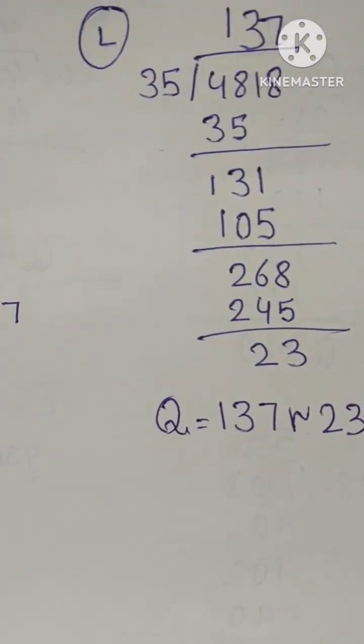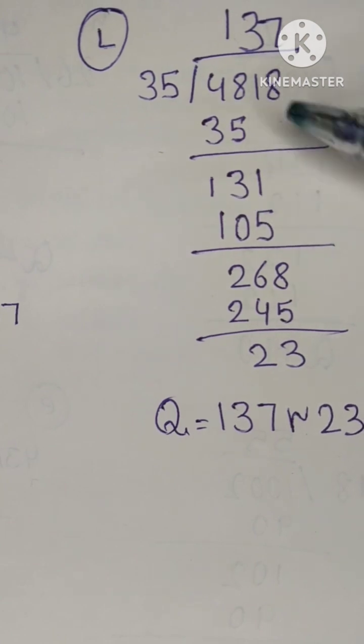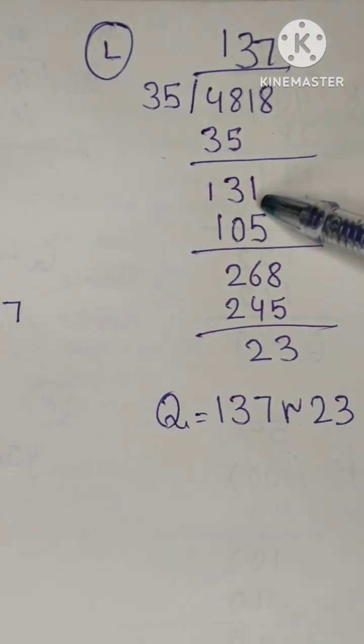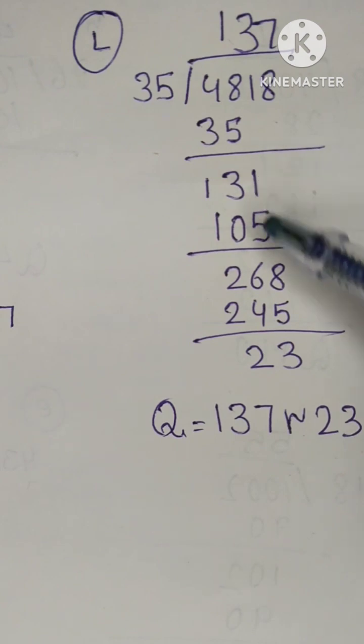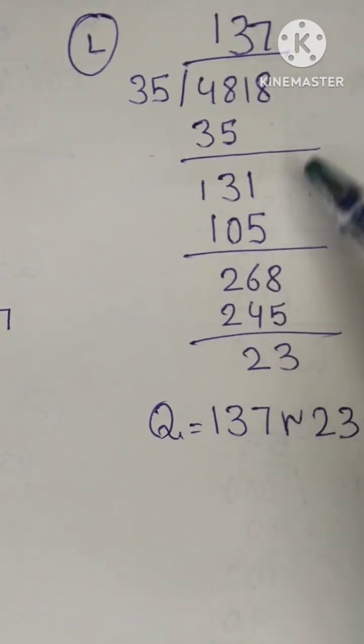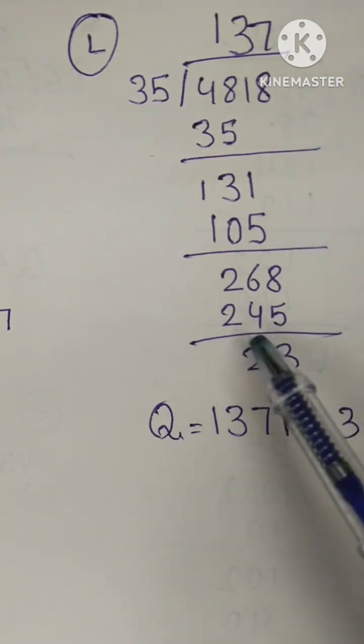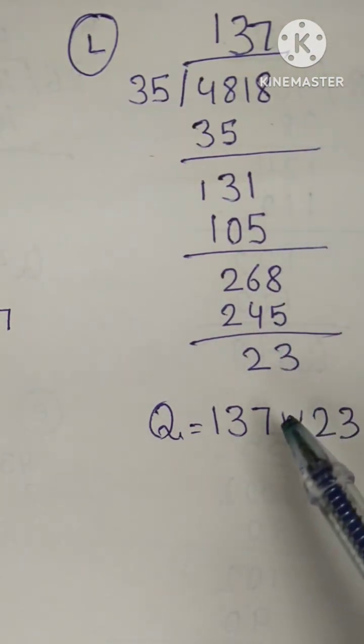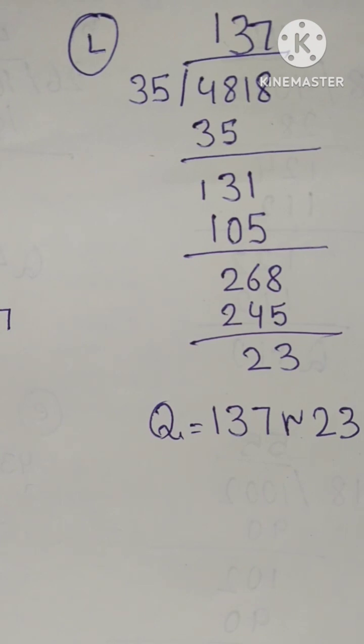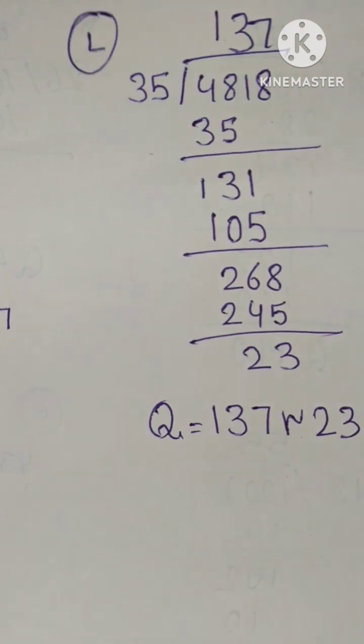Last question of this part: 35 into... 35 minus, 31 drop, 35. 35 into 3 is 105, now you will subtract these two values. 268, 35 into 7 is 245 minus 23. Your answer is quotient 137, remainder 23. I hope you understood. Next video till then, goodbye. Allah Hafiz.